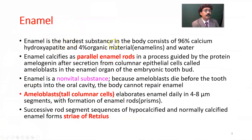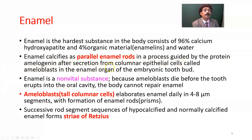Enamel is the hardest substance of the body, consisting of 96% to 98% calcium hydroxyapatite and 4% organic material — that is, enamelin and water. Enamel calcifies as parallel enamel rods in a process guided by the protein amelogenin, after secretion from columnar epithelial cells called ameloblasts in the enamel organ of the embryonic tooth bud.